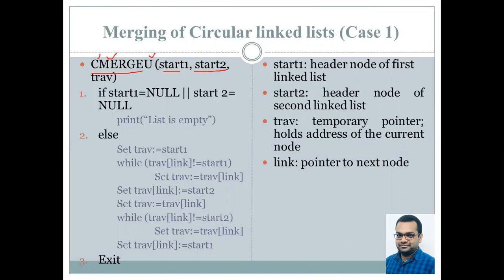Start1 and start2 are the pointers that contain the addresses of the first nodes of their two respective circular linked lists. We initially check that if start1 is null or start2 is null, merging is not possible and we simply print that the list is empty. Otherwise we make use of a temporary traversal pointer, initializing traversal with the first node's address of the first circular linked list. We keep on incrementing traversal till we reach the last node of the first circular linked list.